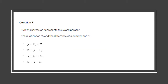Number three: which expression represents this word phrase — 'the quotient of 75 and the difference of a number and 10'? Quotient means divide, so I'm going to say 75 divided by the difference of a number and 10. I'll be dividing by a number and 10, and 'difference' means subtract.